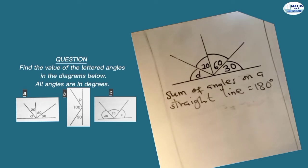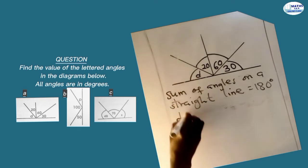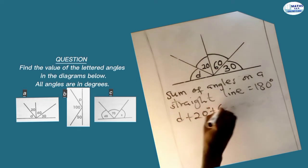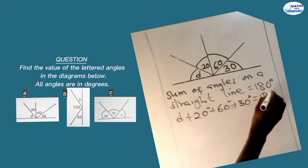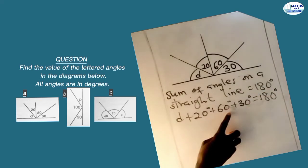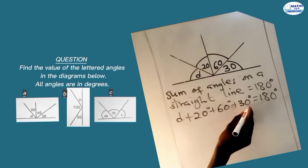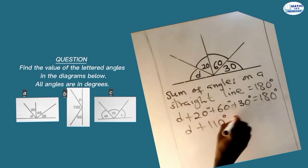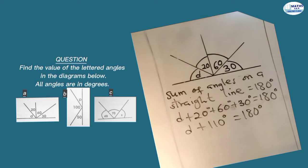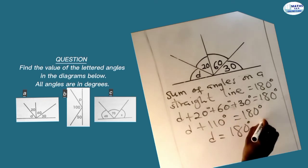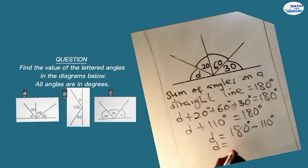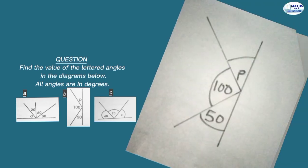We add all these angles and equate them to 180 degrees: d plus 20 degrees plus 60 degrees plus 30 degrees equals 180 degrees. Now, 20 plus 60 plus 30 gives 110, so we have d plus 110 degrees equals 180 degrees. Making d the subject by grouping like terms, we bring 110 to the other side: d equals 180 degrees minus 110 degrees, so d equals 70 degrees.